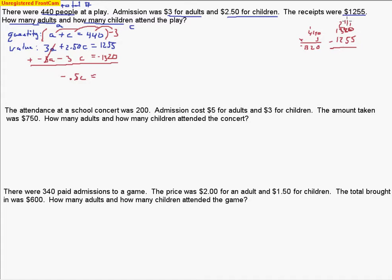Borrowing all the way from the 3, changing it to a 2; 12 changes to an 11. So 11 minus 5 gives me 6 and a 5 — so it's 65, and it's negative. This is good because now I have two negatives, so when I do the division they'll cancel. When dividing a half into a number, you're basically multiplying that number by 2. A lot of people just divide by 5 and get the wrong answer, so here's a way to remember: a fraction bar is the same as a division sign.